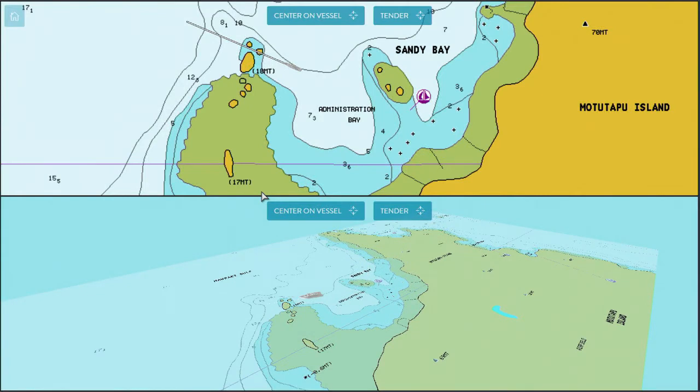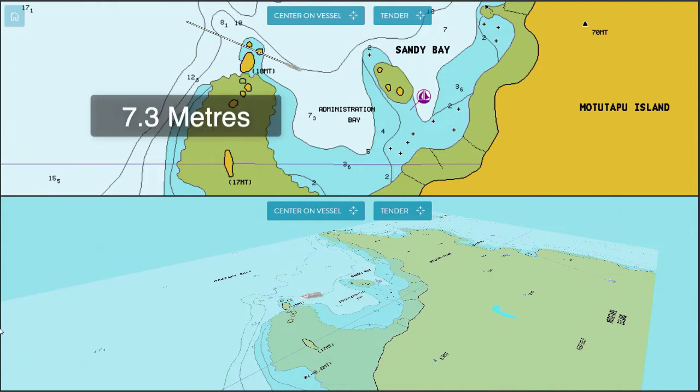Here we are with our superyacht at Administration Bay, Motutapu Island, which is in Auckland, New Zealand. It looks like a beautiful anchorage and we've decided we want to anchor our superyacht for lunch. The chart says there's 7.3 metres of water in the bay, which looks very good.